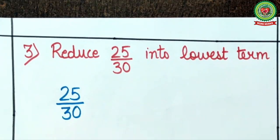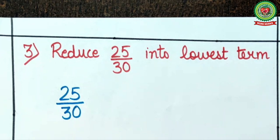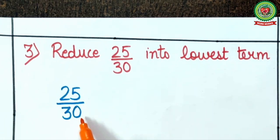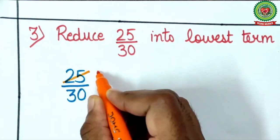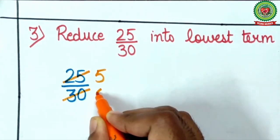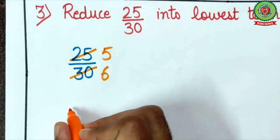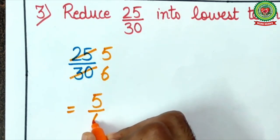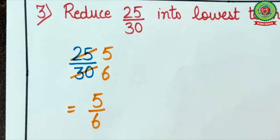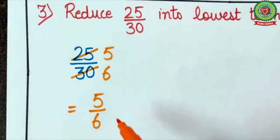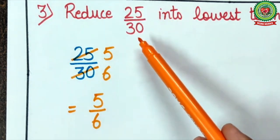Now let's see the next example: reduce 25 upon 30 to its lowest term. Remember the divisibility rule of 5 — the last digit of 25 is 5 and the last digit of 30 is 0. If the last digit is 0 or 5, both numbers come in the table of 5. So 5 times 5 is 25, and 5 times 6 is 30. Further cutting is not possible as the common factor between 5 and 6 is 1. Therefore 5 upon 6 is the lowest term of 25 upon 30.